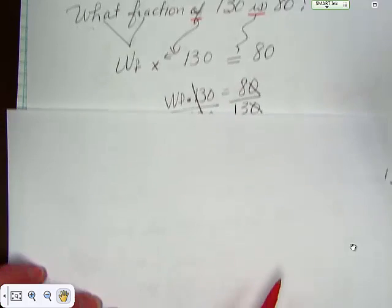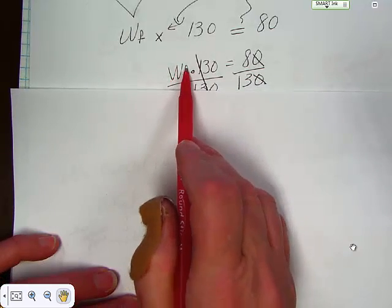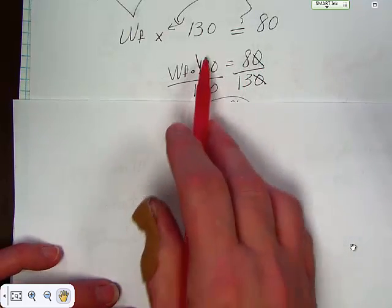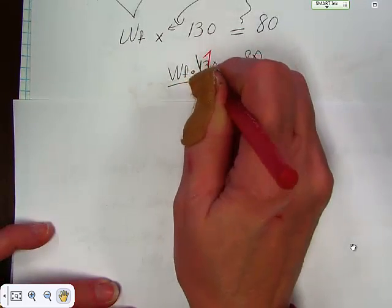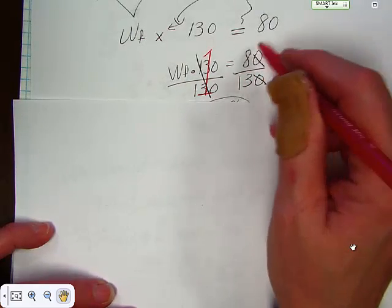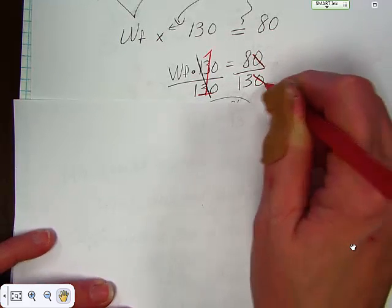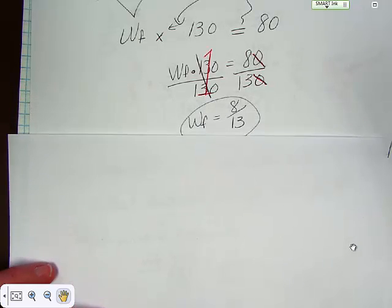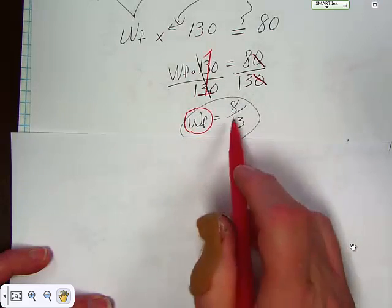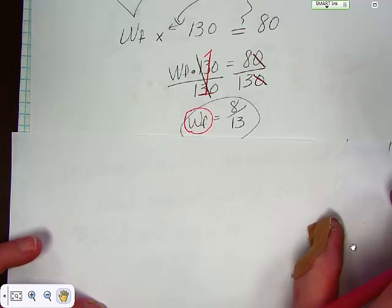Well, it turns out that we can rewrite it as what fraction times 130 equals 80, then we can divide both sides by 130. Remember, that gives us that well chosen one. We divide this side by 130, and we can get rid of the last zero, which is technically dividing by 10, and we end up with the what fraction, which is actually your variable, equal to 8 thirteenths, and that's the answer.